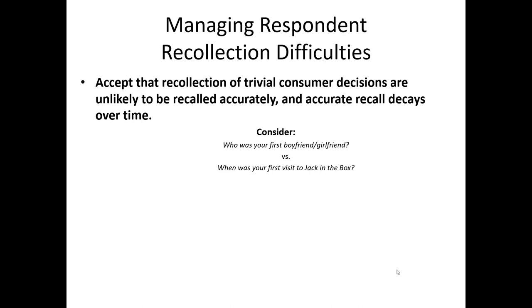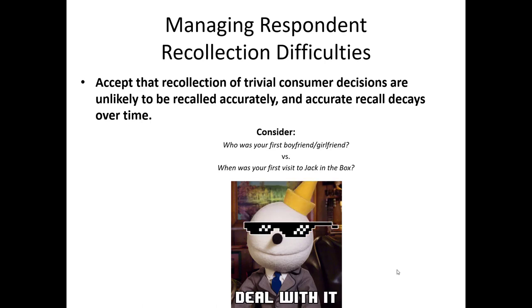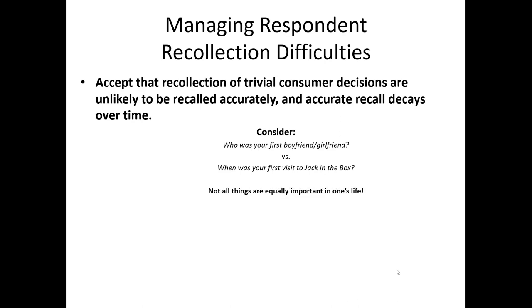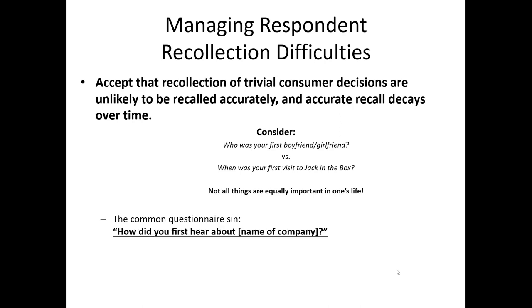Consider two questions: 'Who was your first boyfriend or girlfriend?' versus 'When was your first visit to Jack in the Box?' Which is likely more salient for most people? Of course, in my case it's Jack in the Box, but most individuals will tend toward the first choice. We have to accept that how often people buy a can of tuna fish or purchase a particular type of pepper is not as important as major life events. This relates to a common sin in marketing questionnaires: 'How did you first hear about us?' — followed by a lengthy list of options. In many cases, the option of 'I don't know how I first heard about you' is not even presented, and that's a problem. People simply cannot recall the absolute reason they first heard about a brand or company, so we should include an 'I don't know' option.